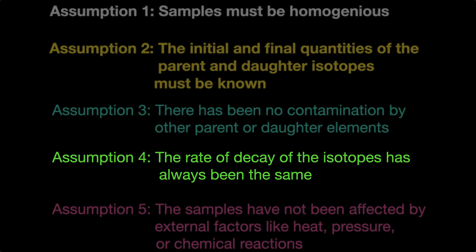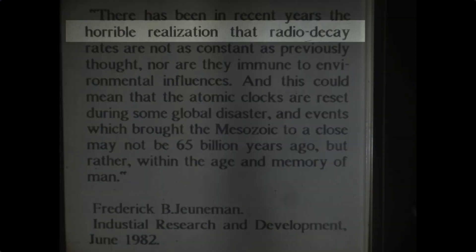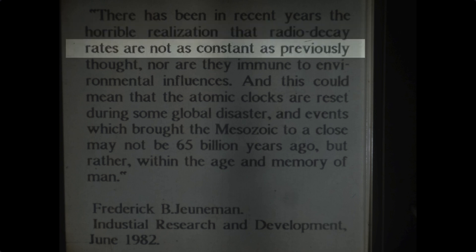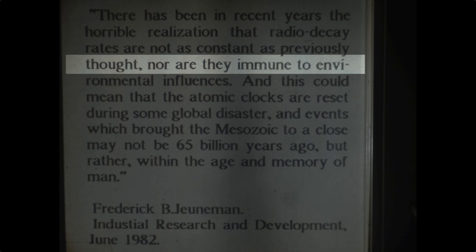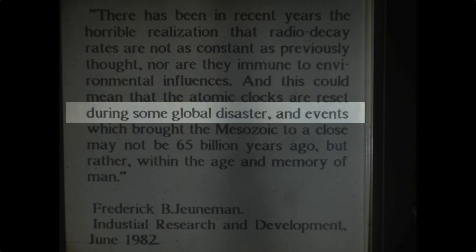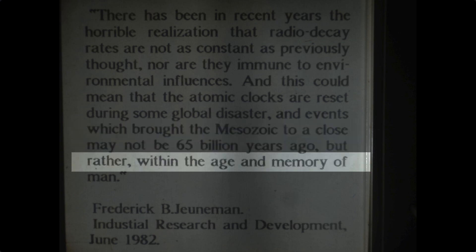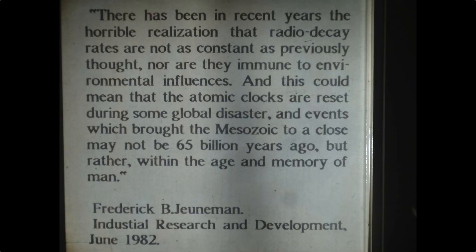Assumption four: the rate of decay of the isotopes has always been the same. But as we saw in episode 25, Frederick B. Jernerman noted there has been in recent years the horrible realization that radio decay rates are not as constant as previously thought, nor are they immune to environmental influences. And this could mean that the atomic clocks are reset during some global disaster, and events which brought the Mesozoic to a close may not be 65 million years ago, but rather within the age and memory of man. Believers have stamped and shrugged this off, but there are people like me who remain sceptical.